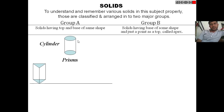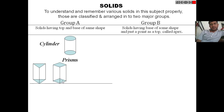Based on the shape of the base, the solid is classified accordingly. A triangular shape base gives us a triangular prism. A square base gives us a square prism. This is the pentagonal prism and this is the hexagonal prism.